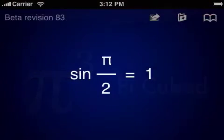Pi Cubed is an application for performing mathematical calculations as you would on a piece of paper, by using a touch-based interface to build and typeset equations, which are then instantly evaluated.